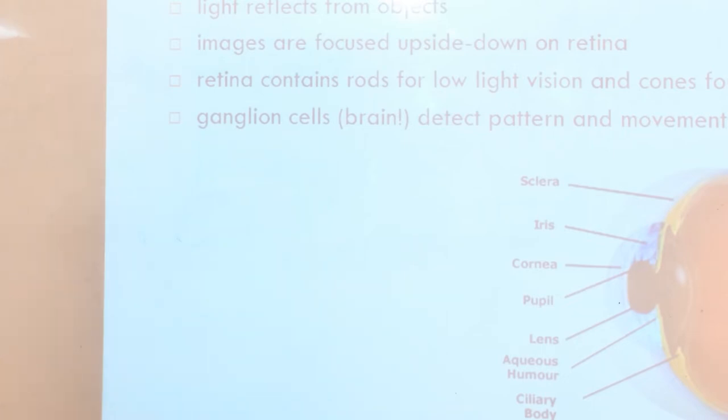the mechanism of receiving light and transforming it into electrical energy. Light reflects from objects and images are focused upside down on retina. Retina contains rods for low light vision and cones for color vision, then it detects pattern and movement.